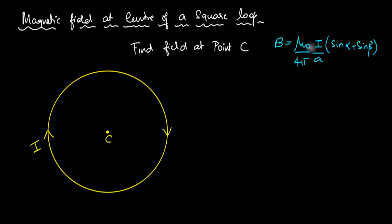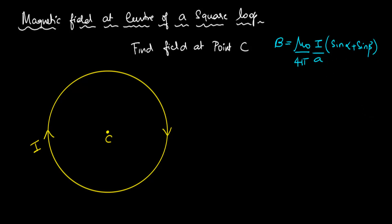I'm going to use this. Now at first you might say this only works for a straight wire — how can I use that here? This is bent, it's a curve, it's a circular loop. Well, we can actually use that by using differential approximation. I'm going to assume that the circular loop is actually made of tiny, tiny straight wires.